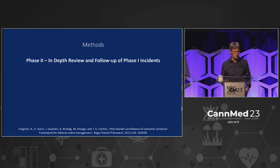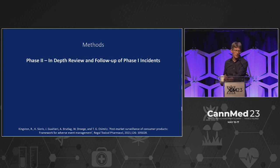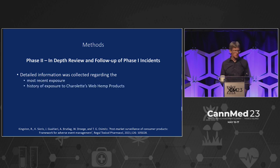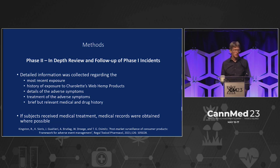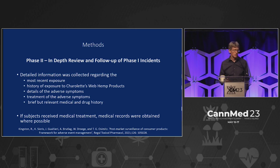Phase two is essentially a follow-up of phase one incidents. Detailed information was collected regarding the most recent exposure, the history of exposure, the details of the adverse symptoms, treatment of the adverse symptoms if there was any, and brief but relevant medical and drug history if they could gather that. If subjects received medical treatments, medical records were obtained — sometimes. All of this seems rather nebulous because you're dealing with consumers, not somebody in a hospital. So you get what you can from them — sometimes they refuse to answer, sometimes they don't know, or sometimes it's an email chain and there's just not enough data.